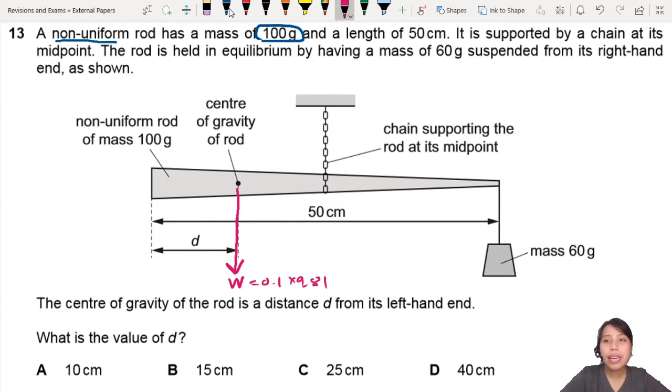Let's continue. Length of 50 cm, supported by chain. The rod is held in equilibrium. Equilibrium means there is no net force and there is no net moment. It's not going to rotate. It's just going to chill there.